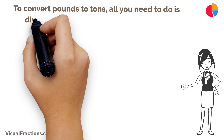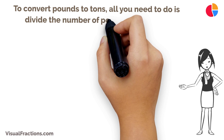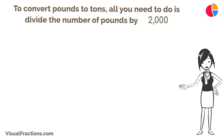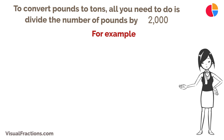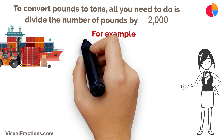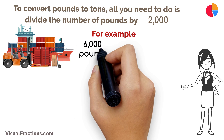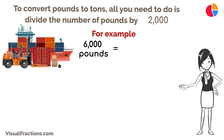To convert pounds to tons, all you need to do is divide the number of pounds by two thousand. For example, if you have a shipment of goods weighing six thousand pounds and you want to know the weight in tons, simply divide six thousand by two thousand.